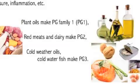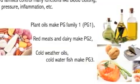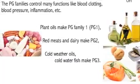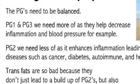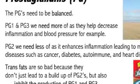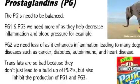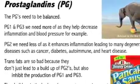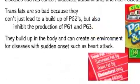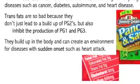Plant oils make prostaglandin family one. Red meats, dairy, as well as trans fats make prostaglandin family two. Cold weather oils and cold water fish make prostaglandin family three. These families need to be mostly balanced, but they are not in us. Families one and three we need more of because they decrease inflammation and blood pressure. Prostaglandin family two we need a little less of because it enhances inflammation, leading to many degenerative diseases like cancer, diabetes, heart disease, and other immune diseases. Trans fats are especially problematic because they not only lead to the buildup of prostaglandin two but also inhibit the production of prostaglandins one and three.